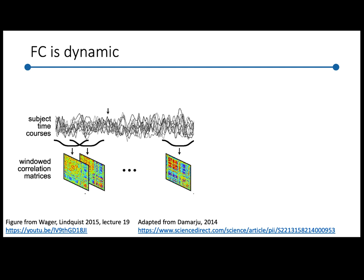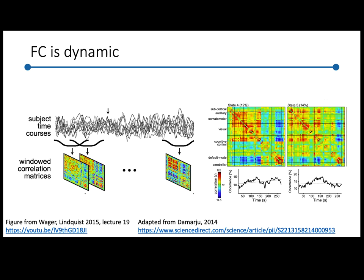A controversy has come up surrounding this anti-correlation: it might not be real. It might be caused by a preprocessing choice called global signal regression, which we'll get to later. Another interesting and also controversial difference is that functional connectivity can be dynamic. If you look at a window early in the time course and get the functional connectivity there, it might look different than a window later. People have tried to pull out different functional connectivity states that tend to occur repeatedly during a resting state or task run.